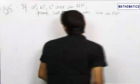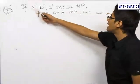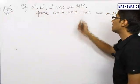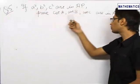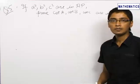In our next problem, we are given a triangle where the side lengths A square, B square and C square are in AP. We have to prove that cot of angle A, cot of angle B and cot of angle C are in AP as well.